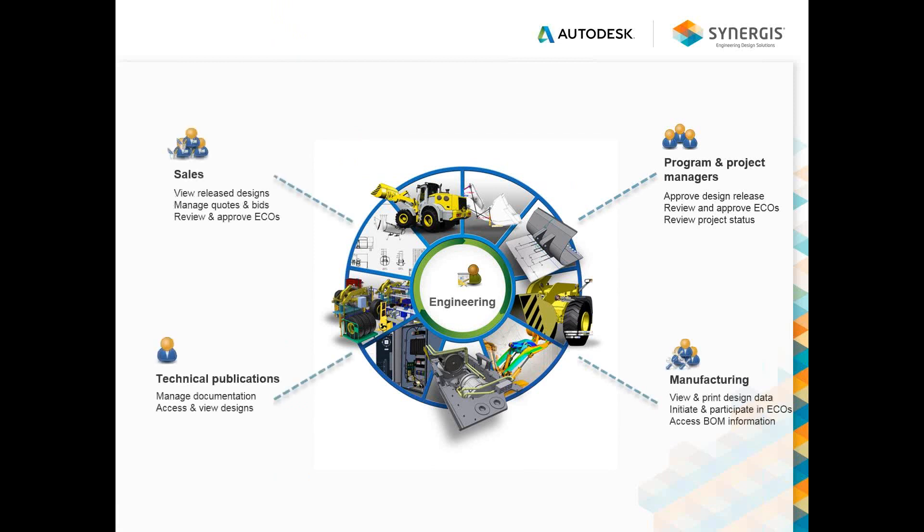Traditionally, engineers are the core beneficiaries of product data management systems — they create the design data that gets stored there. But all that information can be useful to people throughout the organization. Program and project managers who are hands-off with CAD still need to view models and approve design releases and ECOs. Manufacturing needs the data to print drawings, get the bill of materials, or initiate an ECO due to manufacturability issues. Tech hubs need access to design data and also create documentation that needs to be managed. Sales needs access to released designs and may manage quotes, bids, or participate in ECOs.